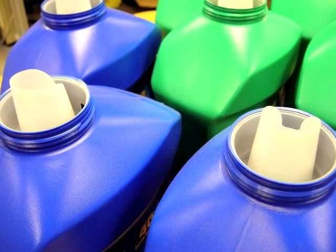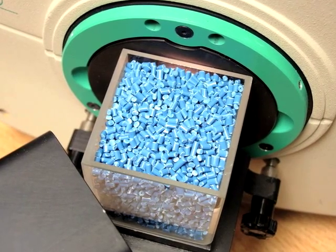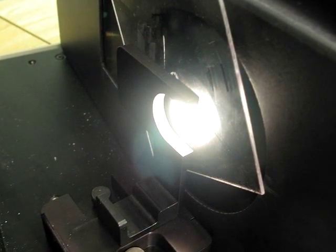HunterLab systems are ideal for checking the color, yellowness, whiteness, opacity, and transmission haze of plastic products.